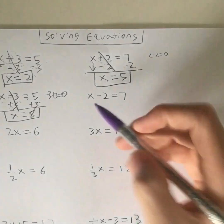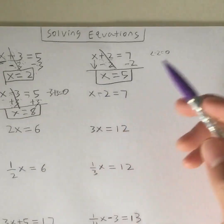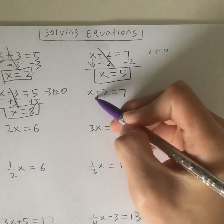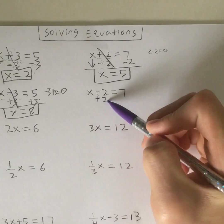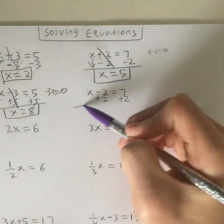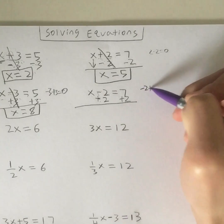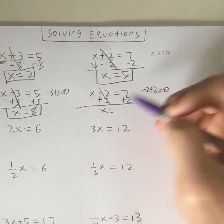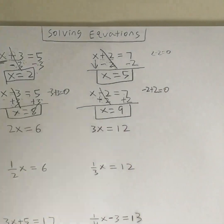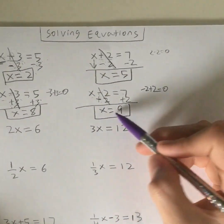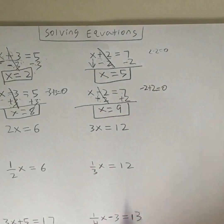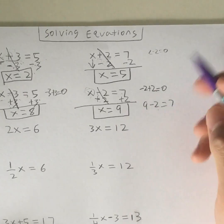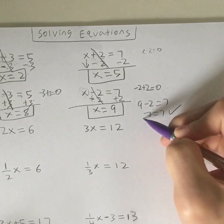Let's move on to this question: x minus 2 is equal to 7. Remember, for minus questions you do the opposite operation. You're adding 2, and whatever we do on the left, we do on the right. Negative 2 plus 2 equals 0, so that cancels out. Bring down the x — x is equal to 7 plus 2, which is 9. Remember to always check your solution by plugging in the value of x back in. So 9 minus 2 equals 7, and 7 equals 7 — your answer is correct.